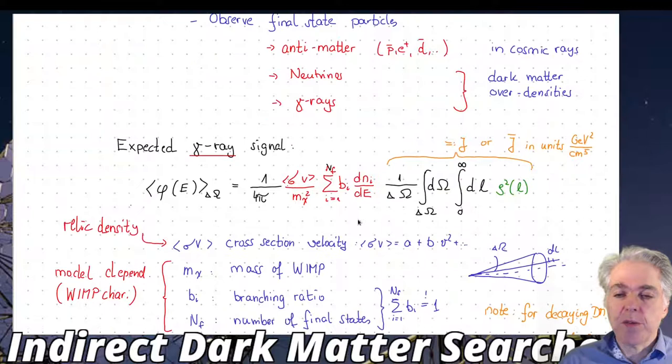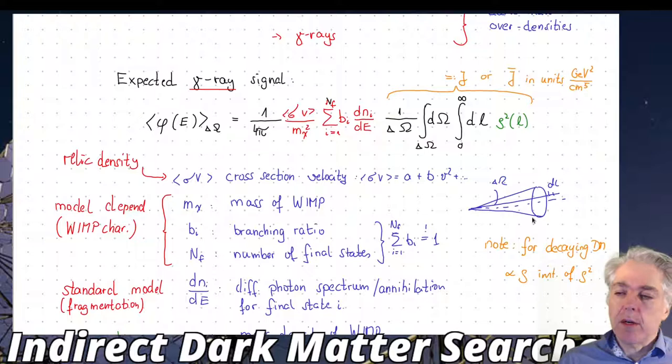Here's a little bit of formal stuff before we discuss the observations. The expected gamma ray signal can be written down rather easily. You would be looking into some solid angle that could be the field of your telescope or a part of your telescope picture which you cut out. That covers the solid angle delta omega in the sky.